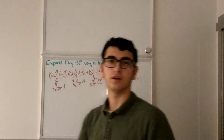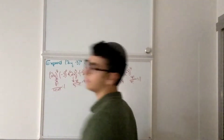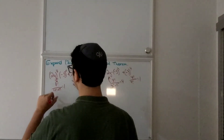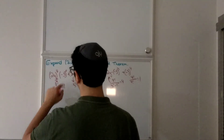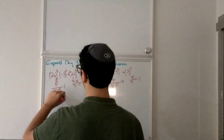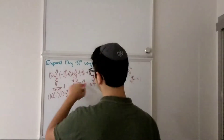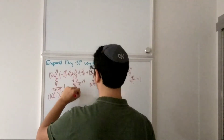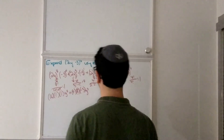Now we can start expanding this the proper way. 2 to the 4th equals 4 times 4, which is 16. So this is going to be 16 times 1, and (-3)^0 is 1, giving us the y to the 4th term. Over here, it's going to be the coefficient 4, times 2 to the 3rd which is 8, times minus 3, giving us the y cubed term.